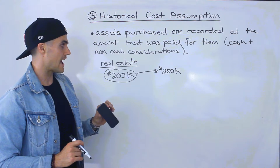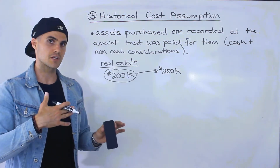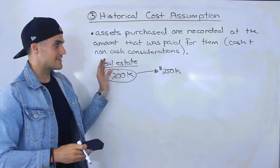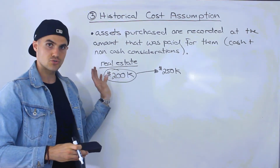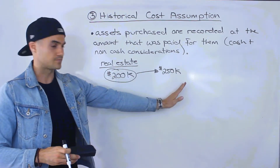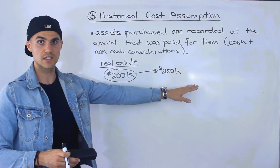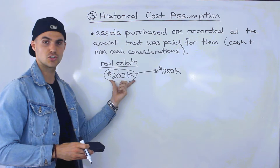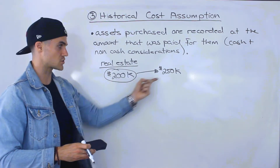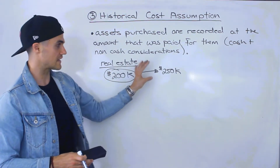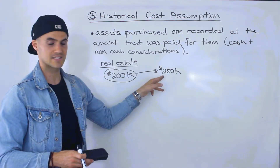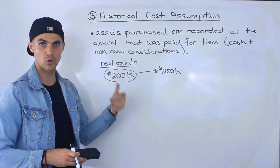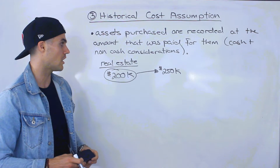Another reason goes back to that first assumption — the going concern or continuity assumption — which assumes that this business is going to continue to operate normally well into the future. If they are going to continue to operate normally, then you're not going to be selling this real estate. You're going to continue using that office for the business.